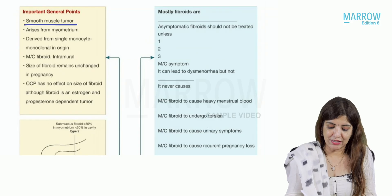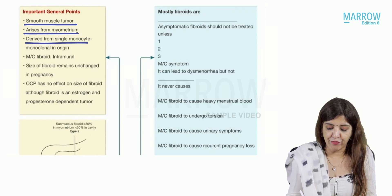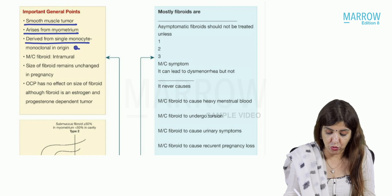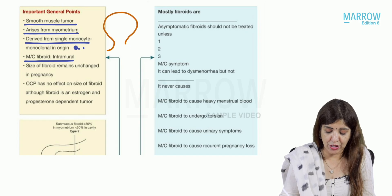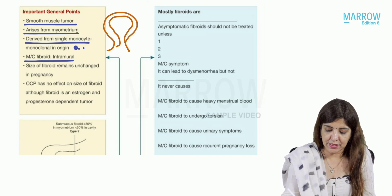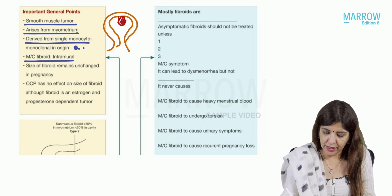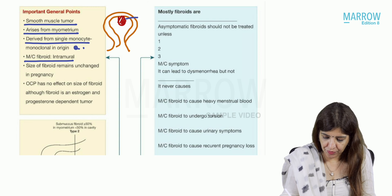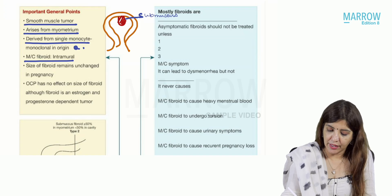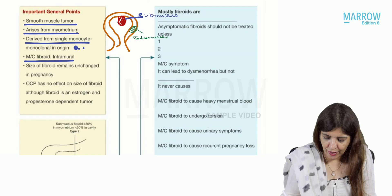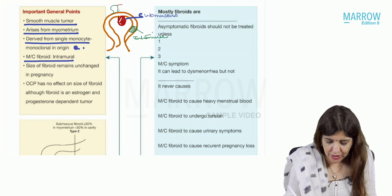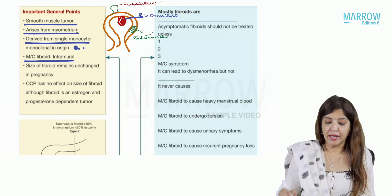Let's talk about fibroid. Fibroid is a smooth muscle tumor, it arises from myometrium, and it is derived from a single monocyte — that is why we say it is monoclonal in origin. The most common type of fibroid is intramural fibroid. There are three types: submucous fibroid is present inside the cavity, intramural fibroid is present inside the myometrium, and subserous fibroid grows towards the peritoneal cavity.